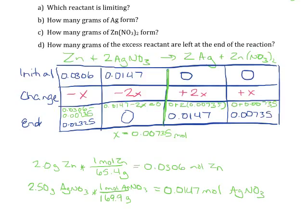It should be very easy for us to tell what is the limiting reactant and which one is the excess reactant, and we can use this information to start answering the questions. The first question asks us which reactant is limiting. We can tell that the silver nitrate is limiting because there was none of that left at the end of the reaction. The zinc is our excess reactant.